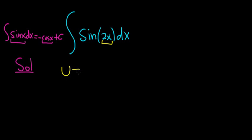You start by letting u be equal to 2x. And then the derivative of u is just du. And then on the right-hand side, we get 2dx, just taking the derivative of both sides.